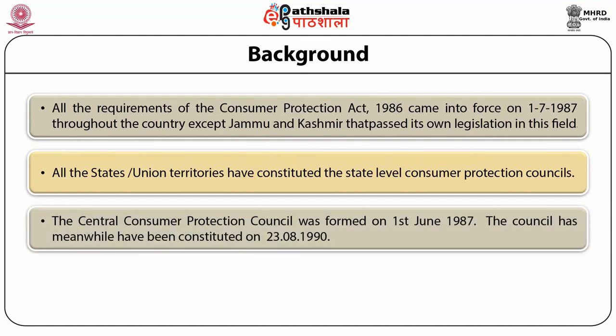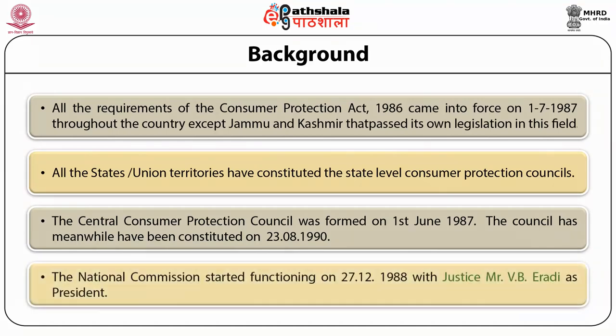All the requirements of the Consumer Protection Act 1986 came into force on 1st July 1987 throughout the country except Jammu and Kashmir, which passed its own legislation. All states and union territories have constituted state-level Consumer Protection Councils. The Central Consumer Protection Council was formed on 1st June 1987. The council was constituted on 23rd August 1990. The National Commission started functioning on 27th December 1988 with Justice Mr. V. B. Aradi as President. Till now, 30 state commissions and 447 district forums have started functioning.